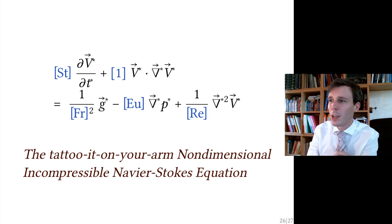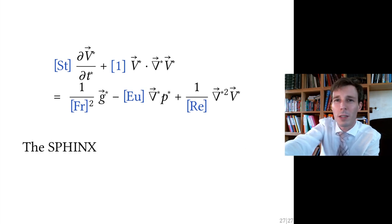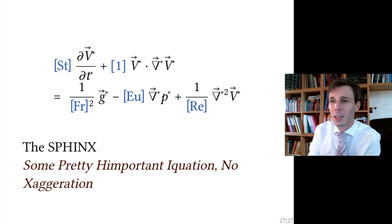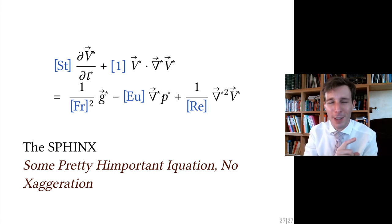This is called the non-dimensional incompressible Navier-Stokes equation — cool enough to tattoo on your arm. In fluid mechanics you may call this the SPHINX equation, because SPHINX is the acronym of the equation. It's some pretty important equation, no exaggeration, so it's definitely worth your time studying and understanding its meaning.